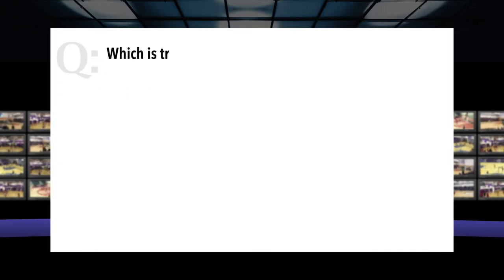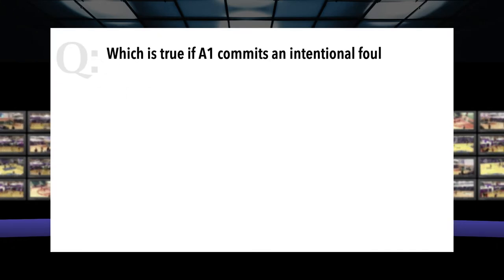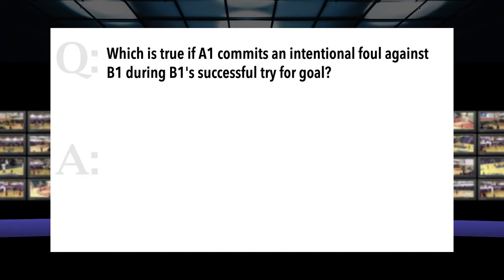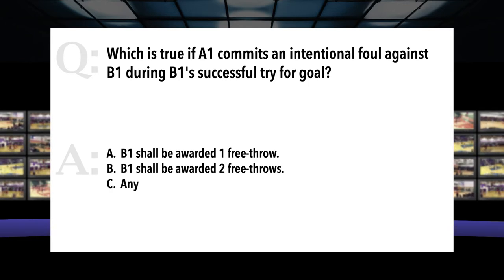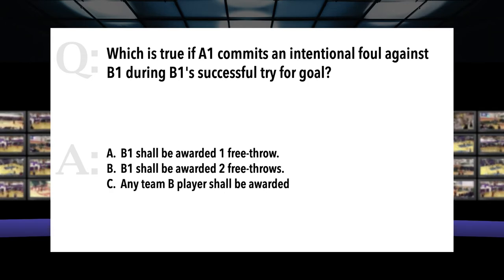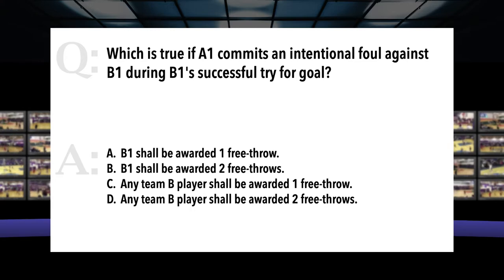Question: Which is true if A1 commits an intentional foul during B1's successful try for goal? A: B1 shall be awarded one free throw. B: B1 shall be awarded two free throws. C: Any Team B player shall be awarded one free throw. D: Any Team B player shall be awarded two free throws. Pretty clear what we have here — an intentional foul committed against a player who's attempting a try and the ball goes in the basket. How many free throws do we award in this situation?